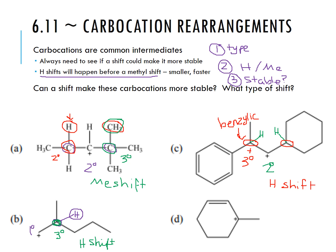In part D, we have a tertiary allylic carbocation — it's on a carbon next to a double bond and already has resonance. Looking at the neighbors: a hydride shift to one carbon would make it secondary; a shift to another carbon would make it primary; and a vinylic carbocation is one of the worst options. So no shift occurs here because it is already very stable.